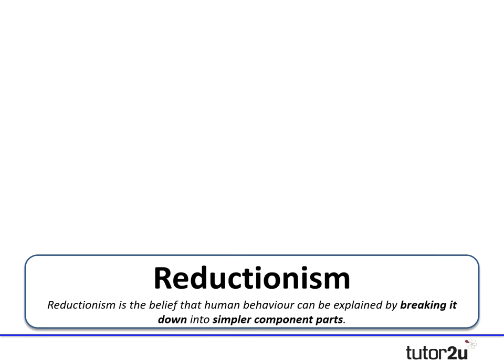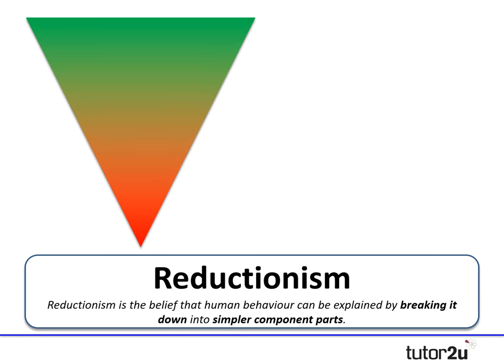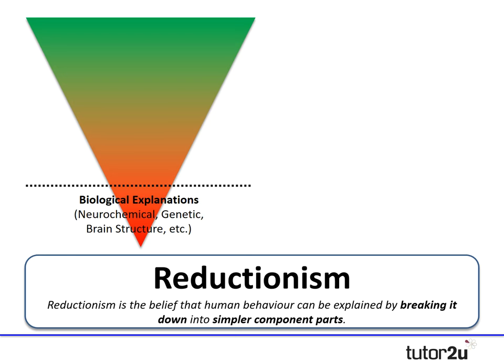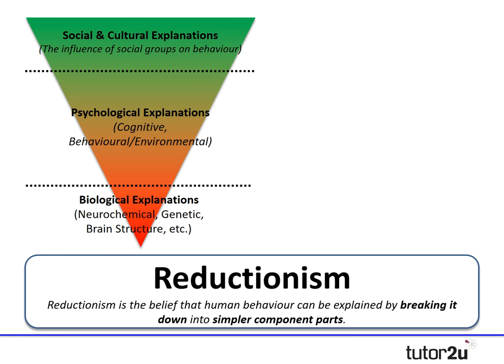The reductionist approach argues that there are different levels of explanation — and levels of explanation is one of the key terms. At the lowest level we might consider physiological or biological factors such as neurochemicals, genetics, brain structure, and hormones. At the middle level we might consider psychological explanations, whether cognitive or behavioural. At the highest level we consider social and cultural explanations, explaining behaviour in terms of the influence of social groups on an individual.